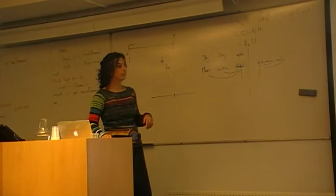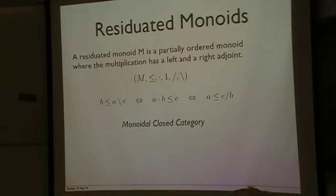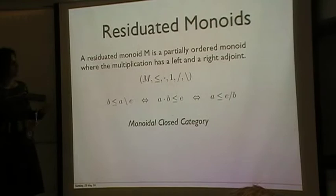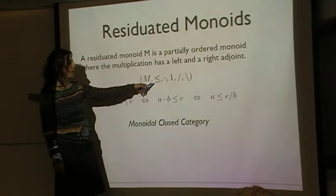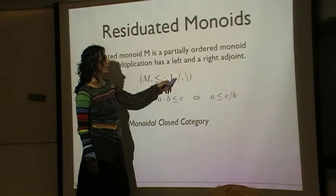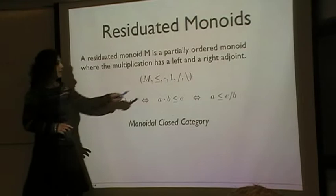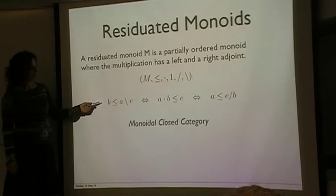Okay, so just to remind you, a residuated monoid M is a partially ordered monoid where the multiplication has a left and right adjoint or residual and you can write this structure as a tuple like this where M is your set as the partial order, multiplication and its unit, and these are the left and right adjoint residuals or implications, however you want to call them.